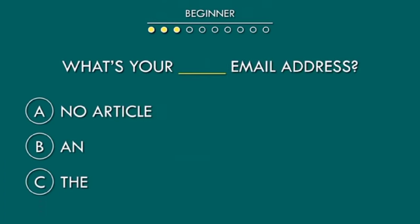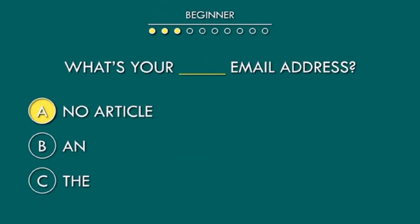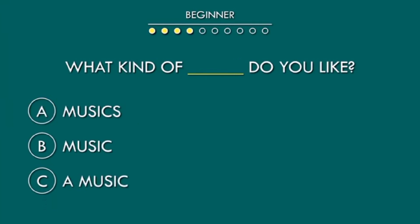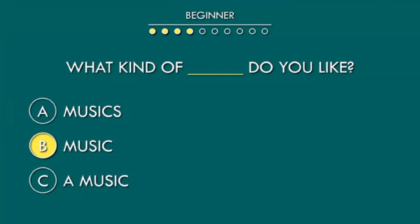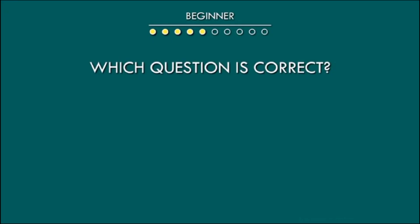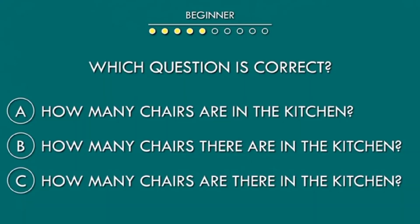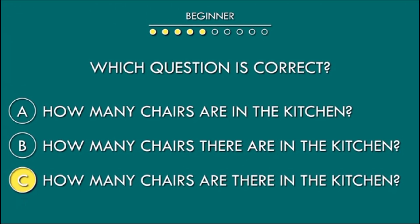What's your desk email address? A is the correct option. What kind of music do you like? B is the correct option. Which question is correct? A: How many chairs are in the kitchen? B: How many chairs there are in the kitchen? C: How many chairs are there in the kitchen? C is the correct option.